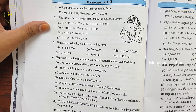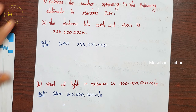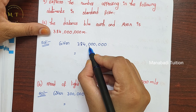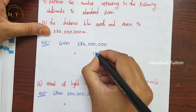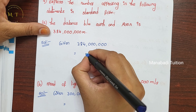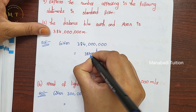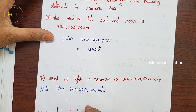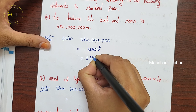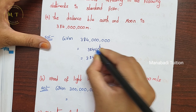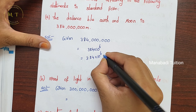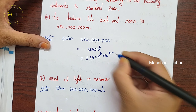Do it the same way. First write down the given number. Count the zeros: 1, 2, 3, 4, 5, 6 — there are 6 zeros, so write 10 power 6. The number before is 384. Write it as a normal number and place the point correctly after 1 digit, giving 2 digits before the point, so multiply by 10 power 2.